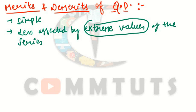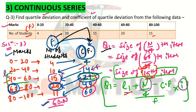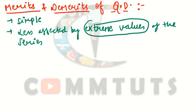The main drawback of this method is that Q1 and Q3 are positional measures. Because the calculation is based only on two positional points in the series, the quartile deviation is less representative of all the values in the data. This is the biggest demerit of this method.